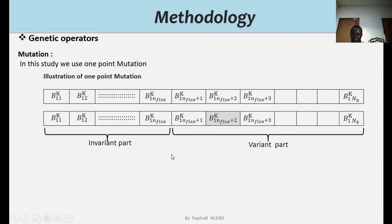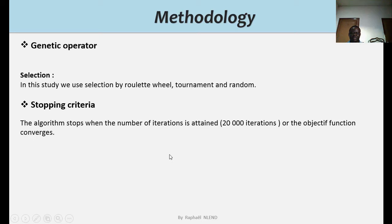Selection in this study is done by roulette wheel, tournament and random. The stopping criteria is met when we attend 20,000 iterations or the objective function converges.